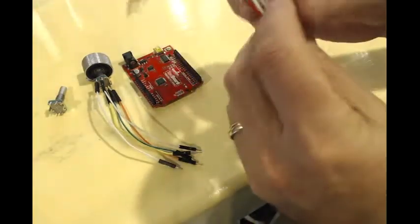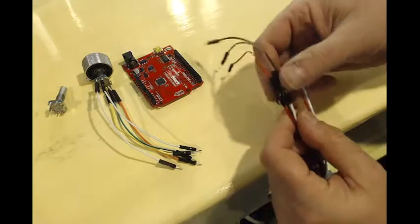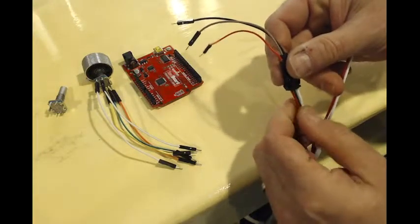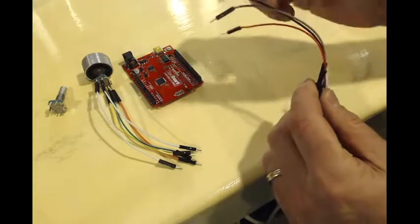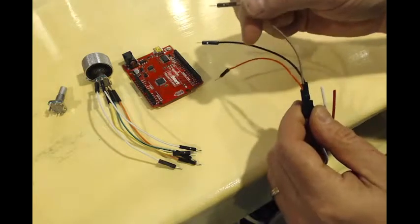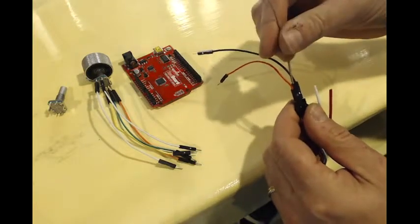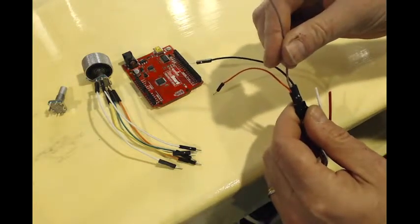On the end are three wires that connect it to our red board. One is for positive, one is for negative, and one wire is the digital information that instructs each LED on what color it needs to be and how bright it needs to be.